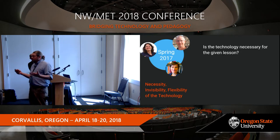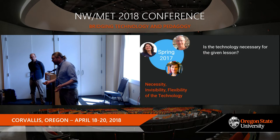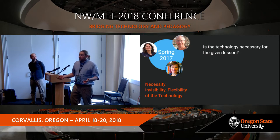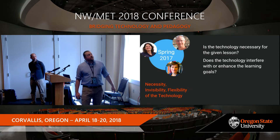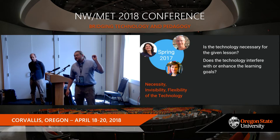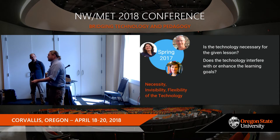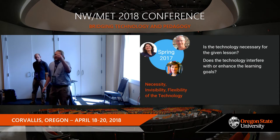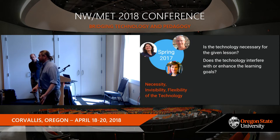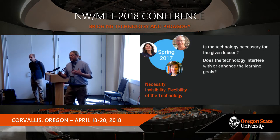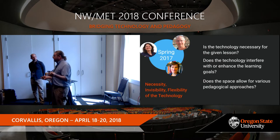They asked on the rubric: is the technology necessary for the given lesson? Does this room actually need to be there? We don't want to build rooms that aren't central to the teaching modality. They also asked: does the technology interfere with or enhance the learning goals? This is what we mean by invisibility — we don't want students looking at a screen; we want them analyzing a chart, critically reading an article, researching on the internet. We're not using an iPad; we're researching. We're not using our smartphones; we're actively responding to an audience response system. Finally: does the space allow for various pedagogical approaches? That's flexibility.